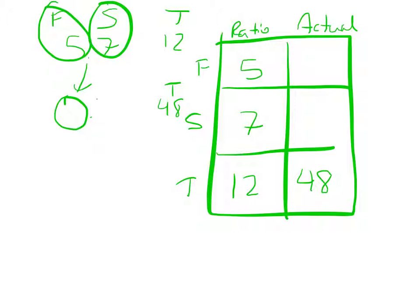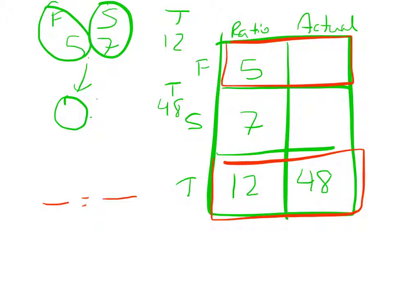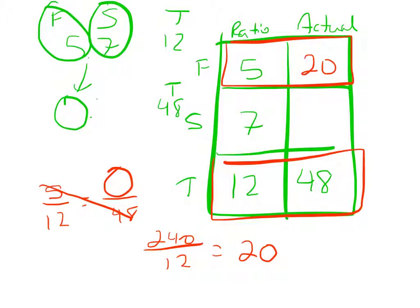So again, we want to make a ratio over here to solve. This time, we want this box and this box down here. So 5 out of 12 were football. So how many out of 48 were football? Again, we cross multiply. 5 times 48. That will be 240. Divide that by 12. 24 divided by 12 would be 2. And just add the 0 there. So there's a total of 20 football players.